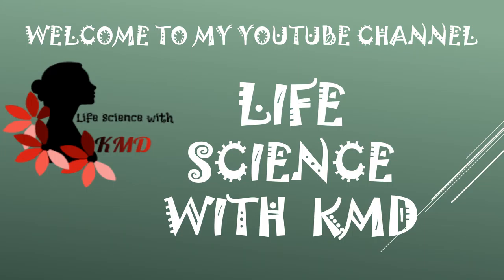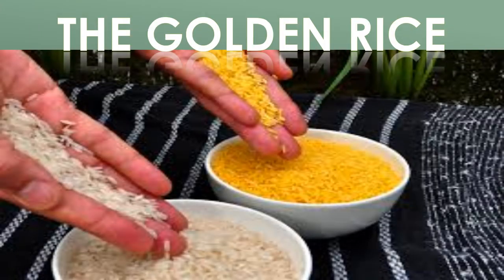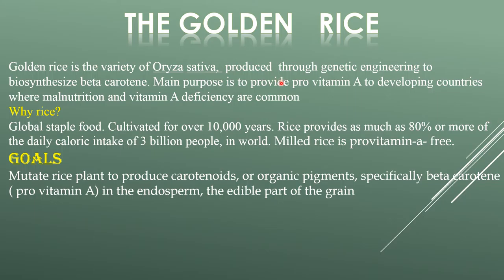Welcome to Life Science with KMD. Today I am going to explain about golden rice. Golden rice is a variety of Oryza sativa produced through genetic engineering to biosynthesize beta-carotene. Its main purpose is to provide pro-vitamin A to developing countries where malnutrition and vitamin A deficiency are common.